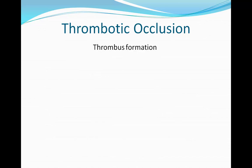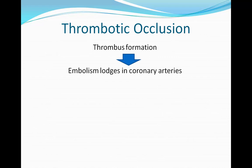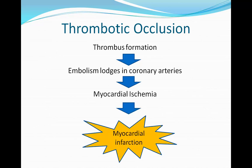There are two ways that myocardial infarction normally occurs. The first way is through thrombotic occlusion and the second way is through peripheral hypertension. In thrombotic occlusion, a thrombus forms and this leads to an embolism being launched in a coronary artery. When that happens, there is myocardial ischemia, which leads to myocardial infarction.